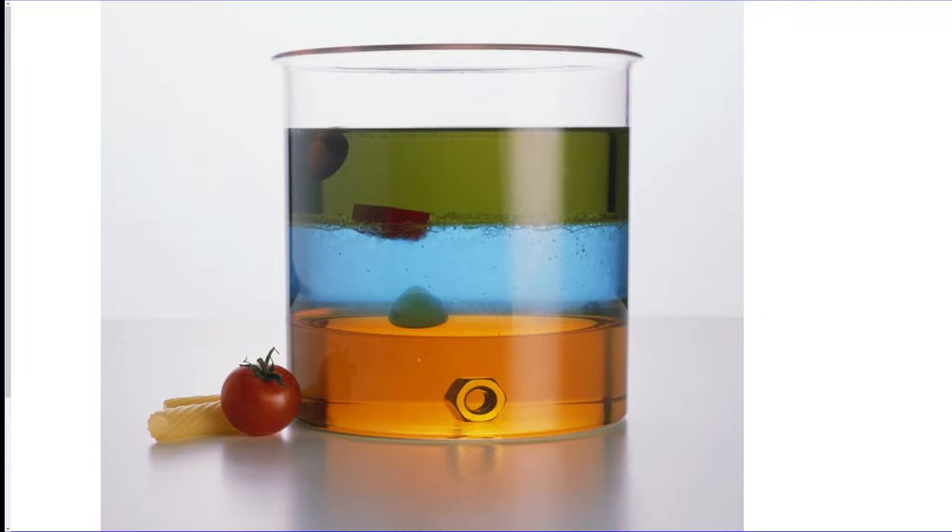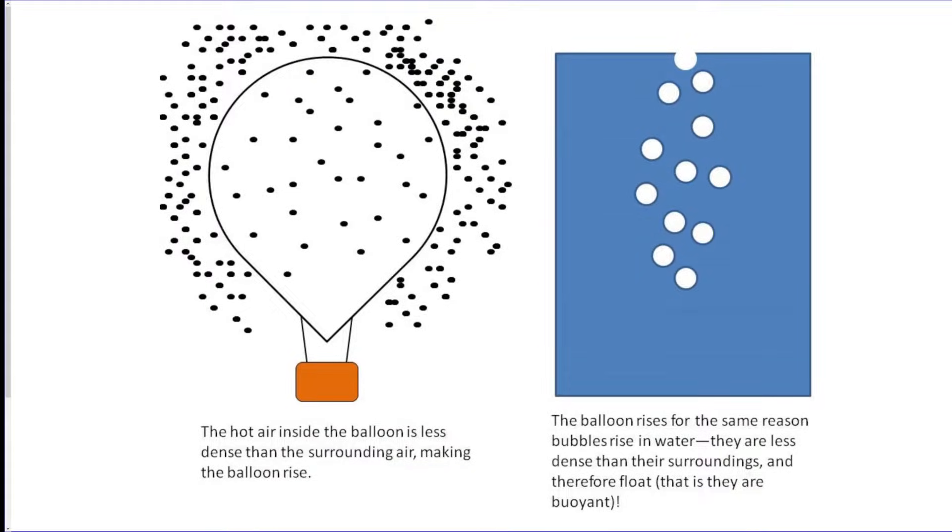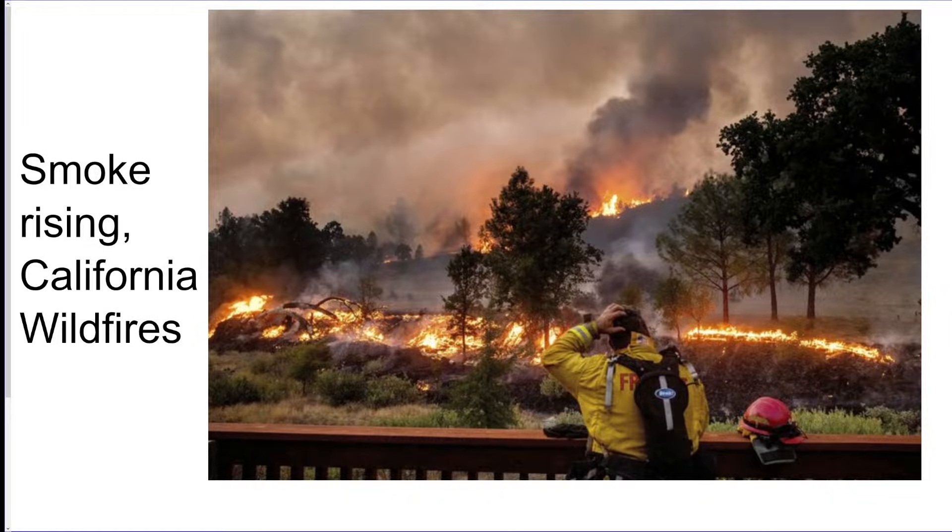Here's another example of some layering that looks like honey and soap and maybe some water and some items of different density. A hot air balloon works because the less dense molecules rise when they're heated up, which makes the balloon float. Smoke always rises because it's less dense than the air.